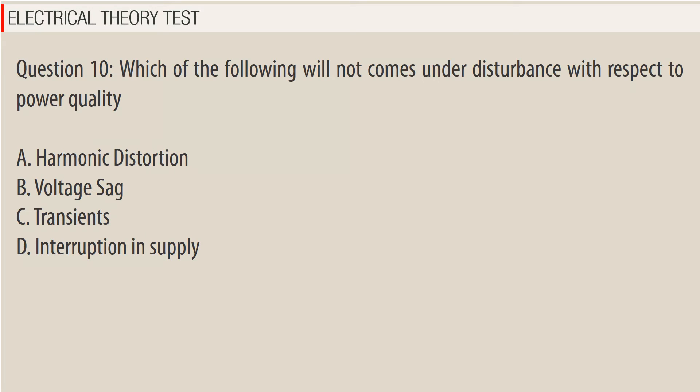Question 10: Which of the following will not come under disturbances with respect to power quality? A. Harmonic distortion. B. Voltage sag. C. Transience. D. Interruption in supply.